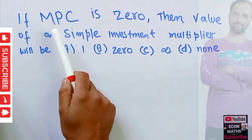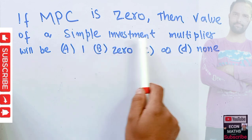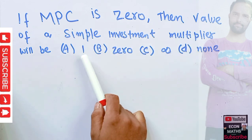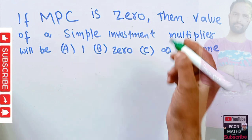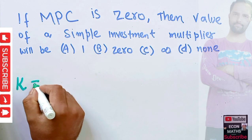The question is: if marginal propensity to consume is zero, then the value of a simple investment multiplier will be? The options are: (A) 1, (B) 0, (C) infinite, or (D) none. The formula for investment multiplier is K, which denotes the investment multiplier.